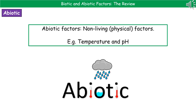The second group are the abiotic factors. That letter A in front tells us it means 'not' in science, so these are the not-living, physical factors — things like temperature, pH, etc. At the bottom, I've used the word abiotic and included small images such as thermometers and rain to trigger that idea about these being physical factors.